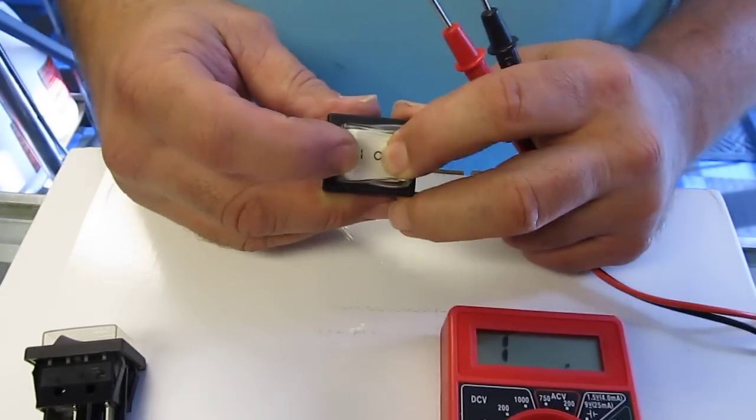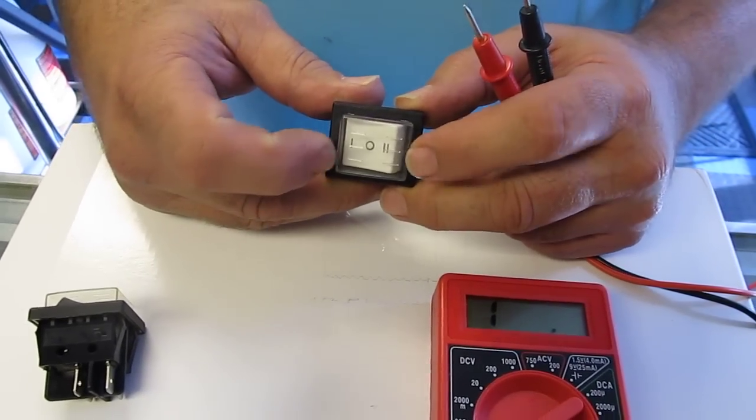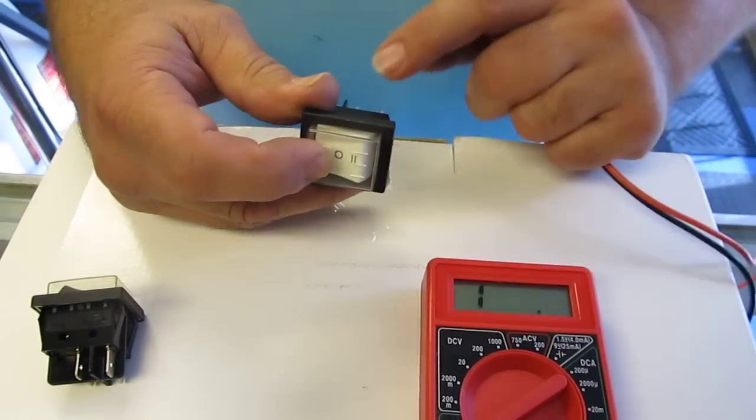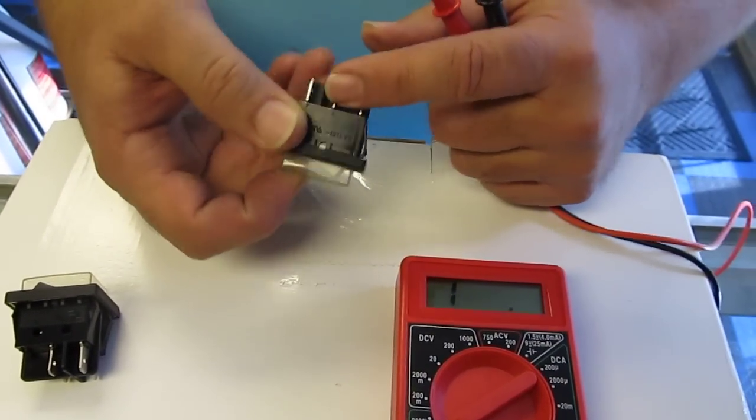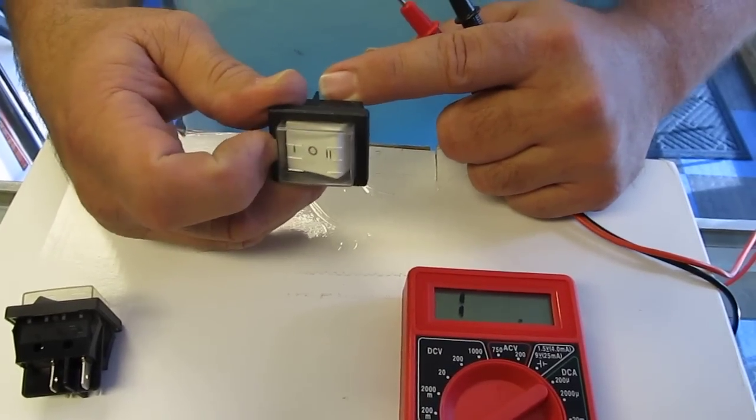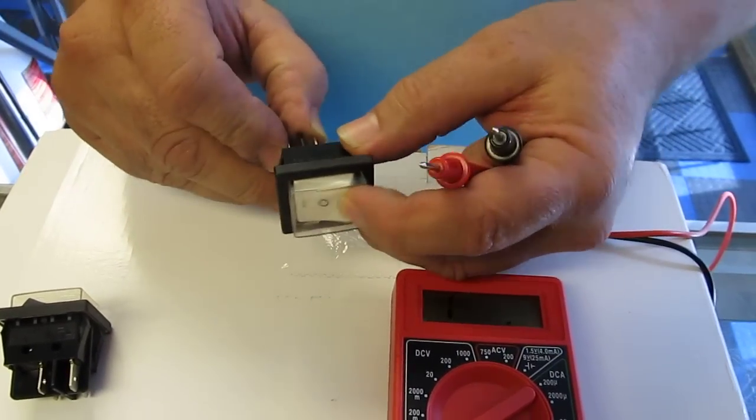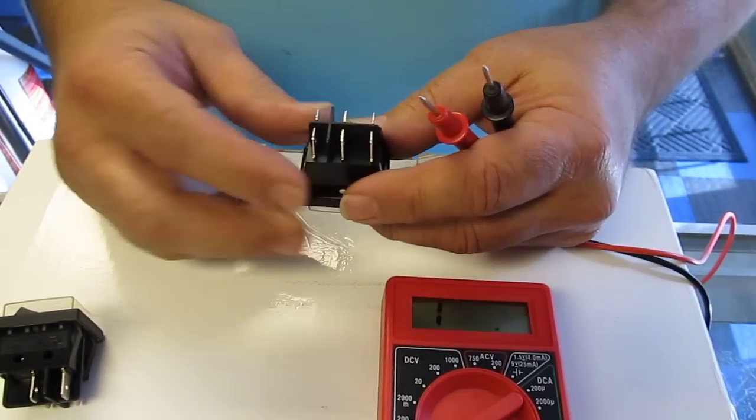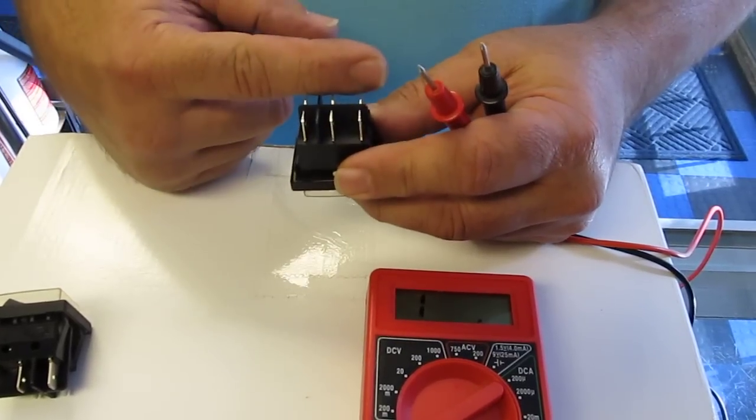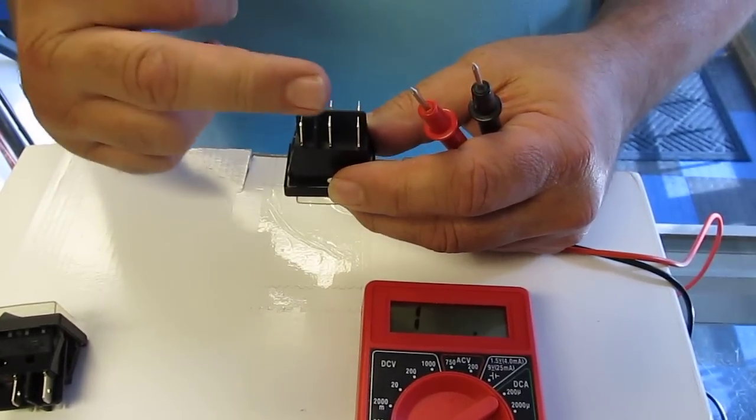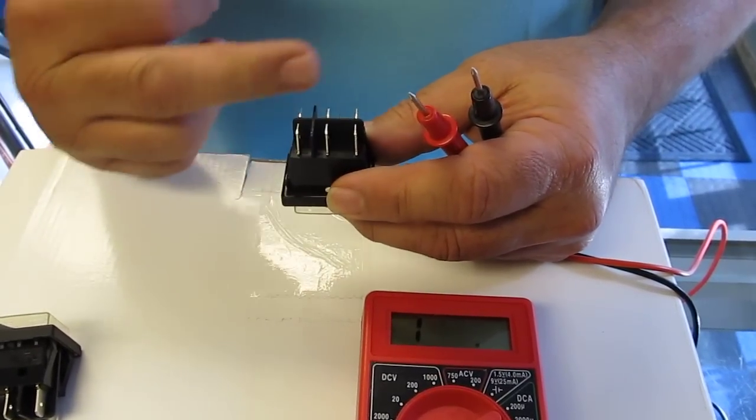This is an on, off, on switch. It's off in the middle and these two terminals are on when it's switched away from these two. These two terminals turn on when you switch it the other direction. These three are repeated on this side of the divider, so this is actually like two switches side by side.